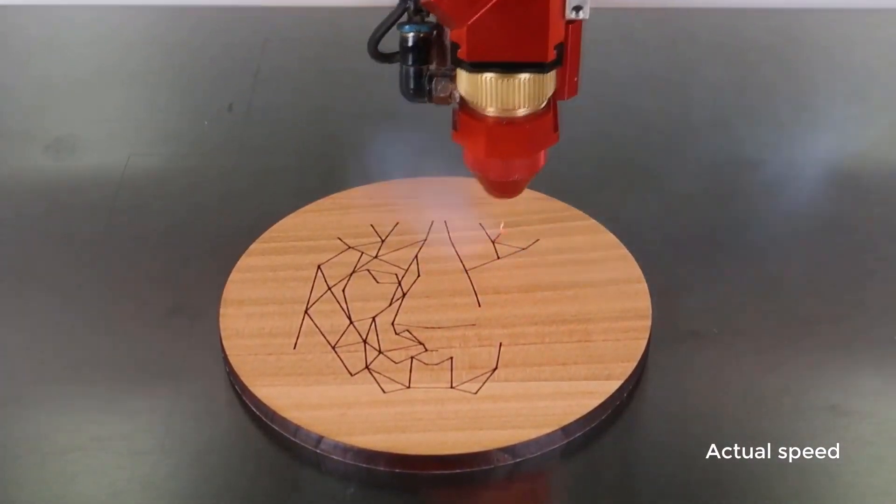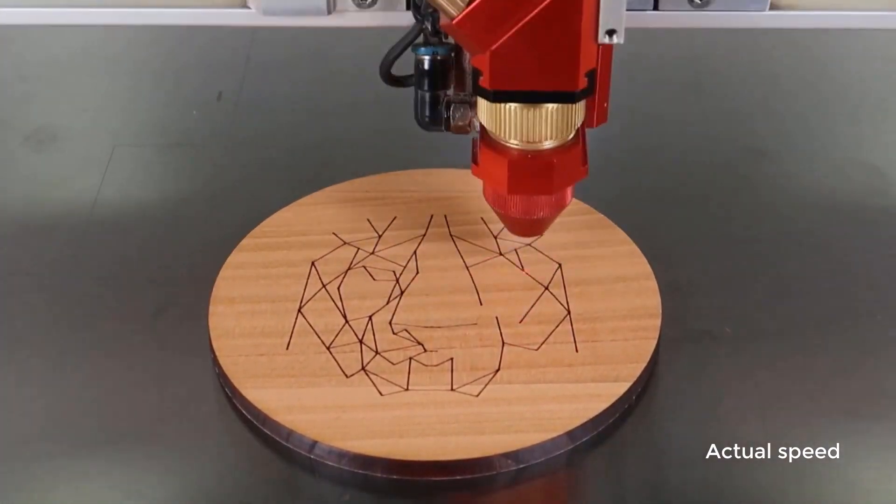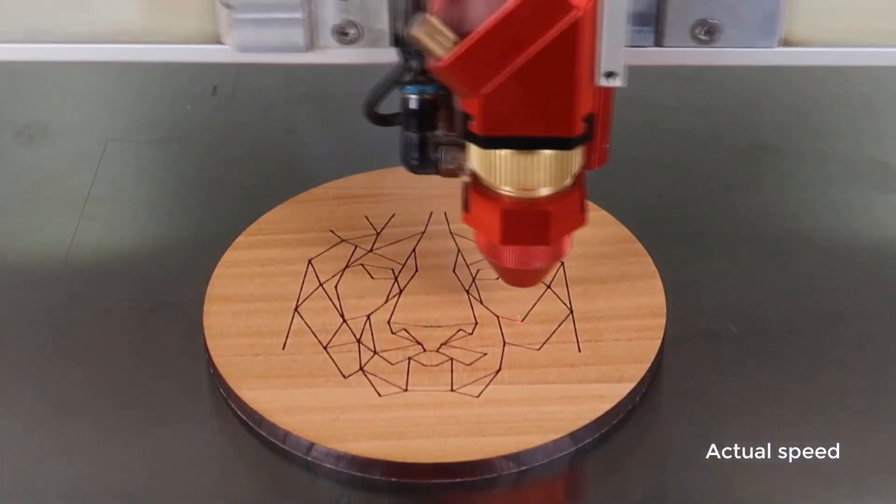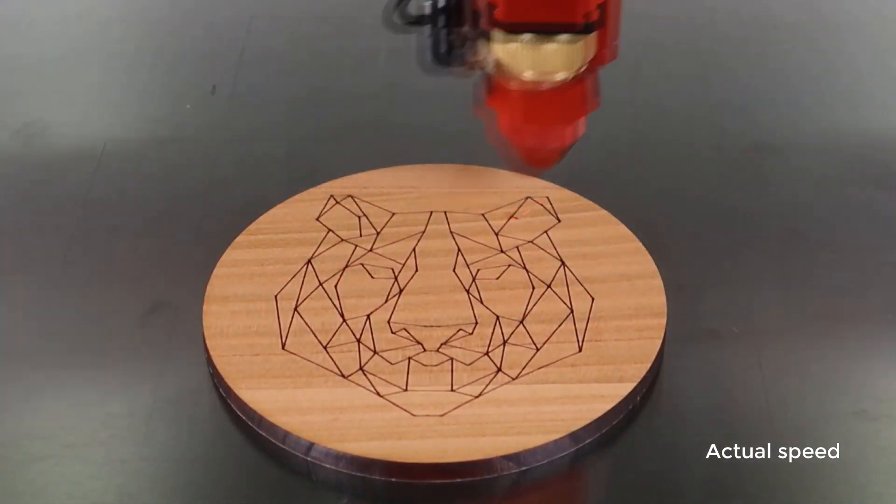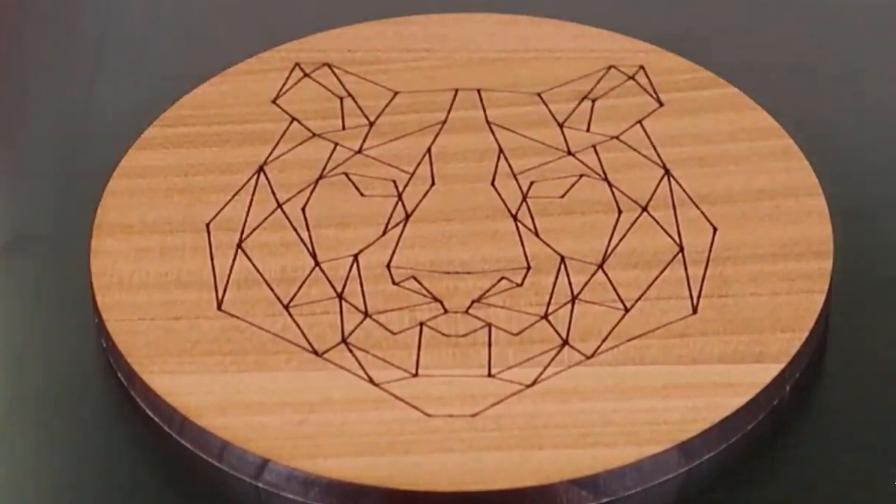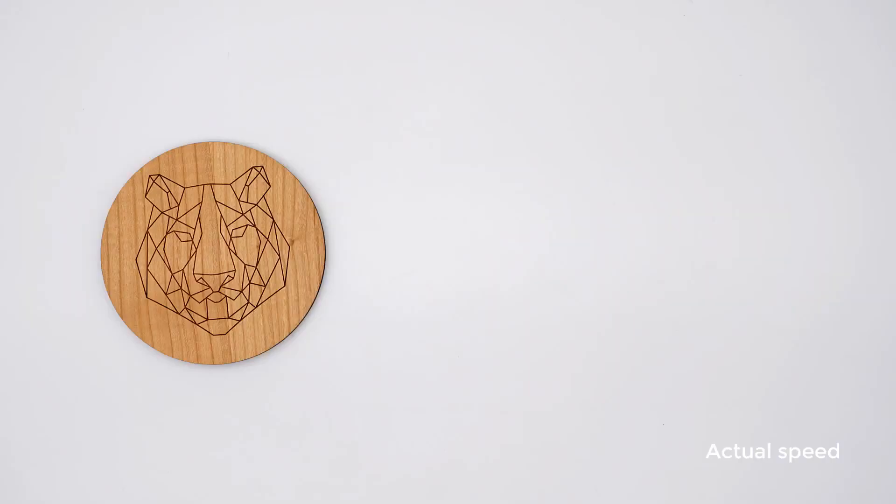The further the laser is out of focus, the thicker the laser beam will become. You can use laser lens sizes like a 4 inch lens for an even thicker beam diameter. Just remember if you go out of focus by too much, the engraving lines become blurry. This is why we recommend testing the Z offset to get the best results.